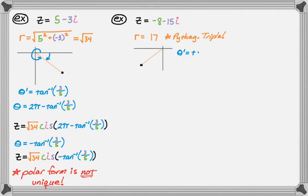I'm going to graph this down here in the third quadrant. So I want my reference angle, inverse tangent of the absolute value of negative 15 over negative eight, which is just 15 over eight, third quadrant. So I'm going to do pi plus the reference angle to get the actual angle.